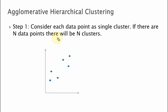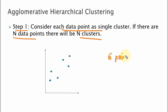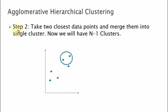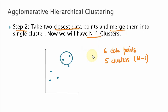Let's understand the steps for performing agglomerative hierarchical clustering. In step 1, it considers each data point as a single cluster. So if there are n points, there will be n clusters. As we can see here, there are six points, so there will be six clusters. Step 2 is to take any two closest data points and merge them into a single cluster. After merging, we will have n-1 clusters. As we can see, we have six data points and now five clusters, which is n-1.